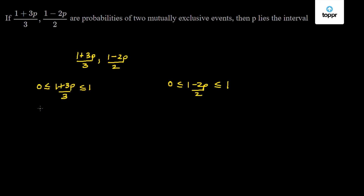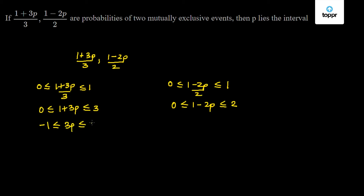Solving further, we can write 0 ≤ 1 + 3p ≤ 3, and 0 ≤ 1 - 2p ≤ 2. Simplifying: -1 ≤ 3p ≤ 2, giving -1/3 ≤ p ≤ 2/3. And -1 ≤ 2p ≤ 1, giving -1/2 ≤ p ≤ 1/2.